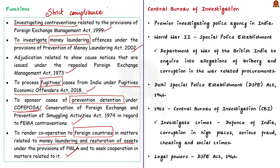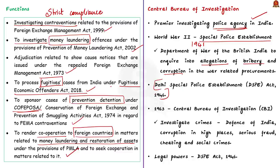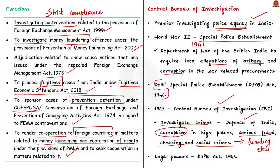Now let us move on to the Central Bureau of Investigation. The CBI is the Premier Investigative Police Agency in India. During World War II, the Special Police Establishment was constituted in 1941 in the Department of War of British India to enquire into allegations of bribery and corruption in war-related procurements. It was later formalized as an agency of the Government of India by enacting the Delhi Special Police Establishment Act of 1946. In 1963, the CBI was established to investigate serious crimes related to defence, corruption in high places, serious fraud, cheating, and social crimes like hoarding and black marketing.